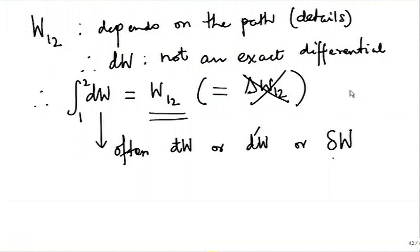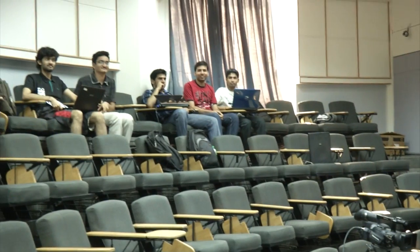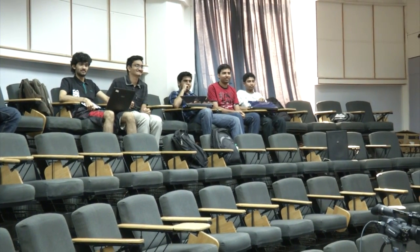Since dW is non-exact, it is often represented by a crossed-D notation, D-prime W, or some people use δW to distinguish it from mathematically exact differentials. For us, it is not necessary to use those notations — we will continue to use dW while being conscious that it is not an exact differential. If I see in an answer book something like ΔW, I draw a red line and do not evaluate that answer book any further — at least one of you would have faced that in the first quiz. That is the way to enforce learning.